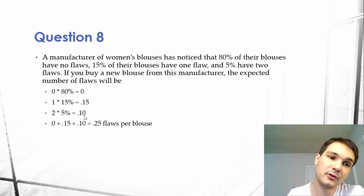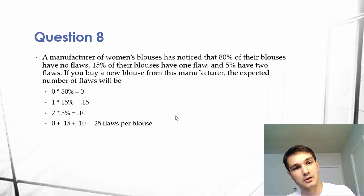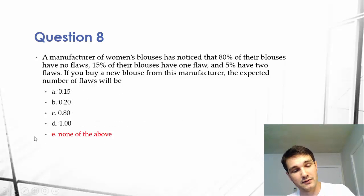Then we take our 0 plus .15 plus .10 to get an average of .25 flaws per blouse. So out of every four blouses, you'll get about one flaw. Now there is no .25 here, so the answer is none of the above.